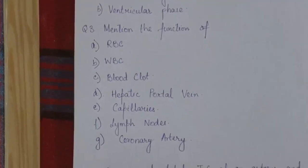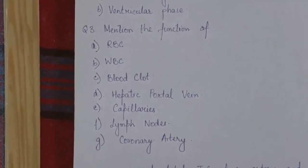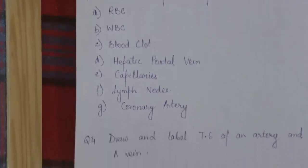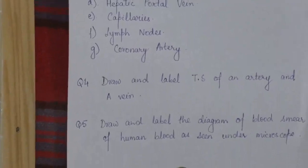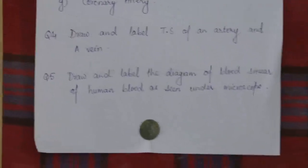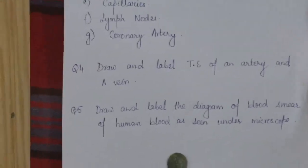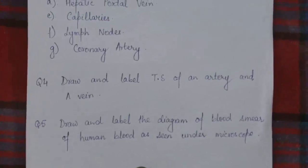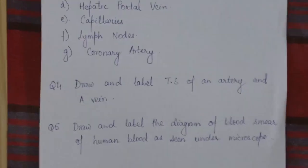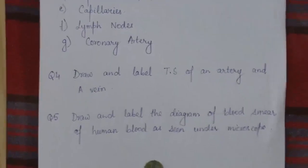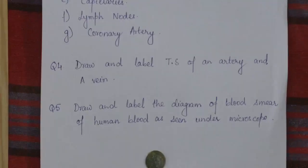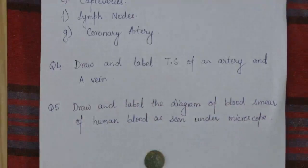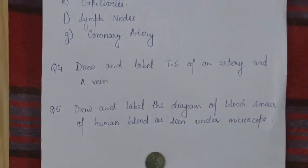Question number four: draw and label the transverse section of an artery and a vein. Question number five: draw and label the diagram of a blood smear of human blood as seen under a microscope.